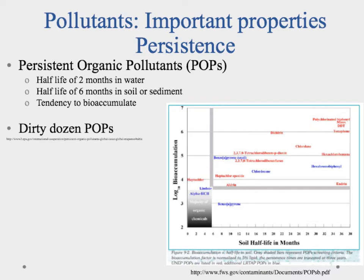There's also a tendency to bioaccumulate as a requirement. This figure shows log bioaccumulation on the y-axis and soil half-life in months on the x-axis, and the portion in the gray boxed-off area represents the persistent organic pollutants.